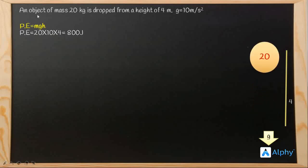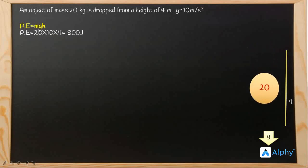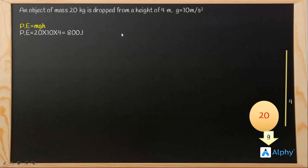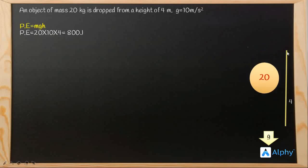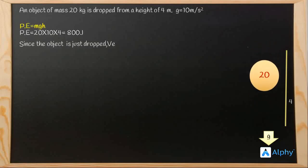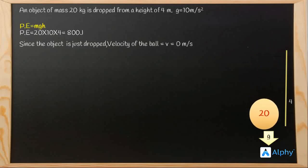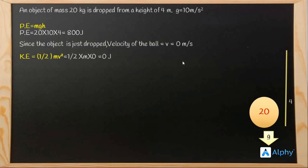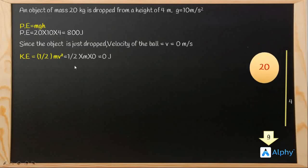The mass is 20 kg, so we put 20 in place of m. The acceleration due to gravity is 10 m/s², so we put 10 in place of g. The height is 4 meters, so we put 4 in place of h, giving potential energy as 800 joules. For kinetic energy at the initial point, the velocity is zero since the object is just dropped — v equals zero m/s. Hence kinetic energy, which is half mv squared, equals zero joules.